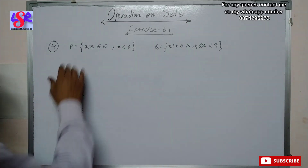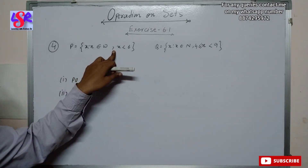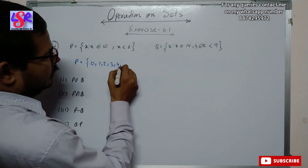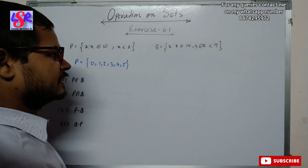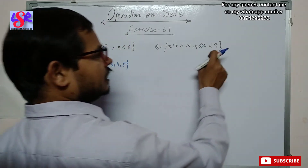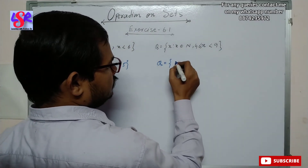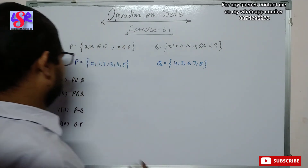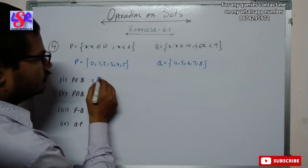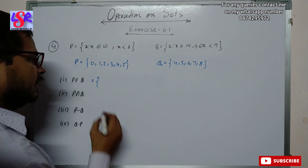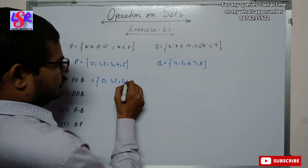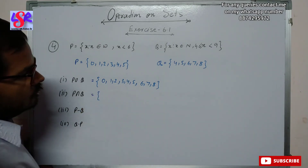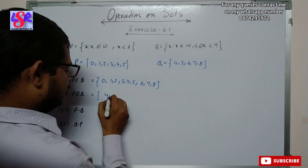Let's move to question four. P = {x : x ∈ whole numbers, x < 6} = {0, 1, 2, 3, 4, 5}. Q = {x : x ∈ natural numbers, 4 ≤ x < 9} = {4, 5, 6, 7, 8}. For P union Q, we write all elements without repeating: {0, 1, 2, 3, 4, 5, 6, 7, 8}. For P intersection Q, the common elements are {4, 5}.